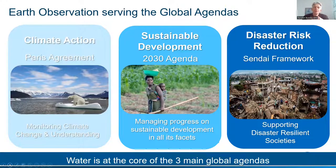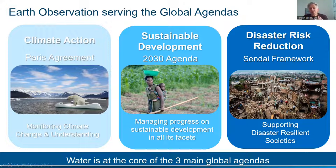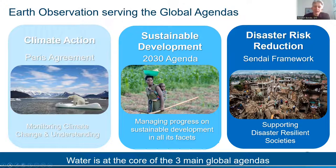Satellites serve the global agendas. The Paris Agreement has a number of satellites offering information about climate change. There is a lot of satellite information going into the SDGs, and the Sendai Framework is supported by satellites providing near real-time information on disasters such as flooding and earthquakes. Satellites are part of all global agendas, and this is expected to remain the case and even increase in the future.